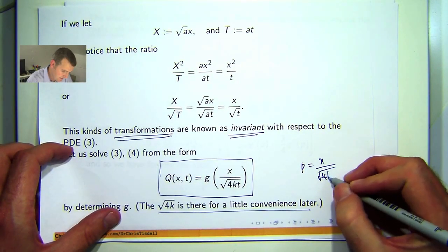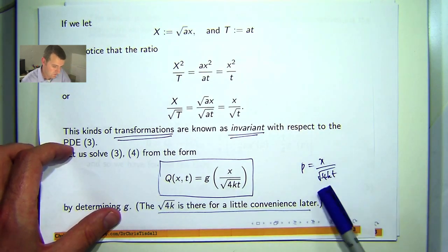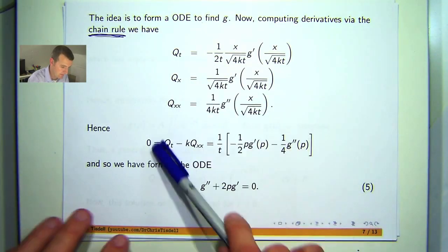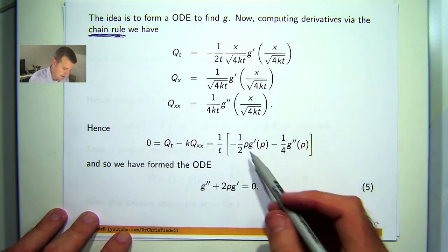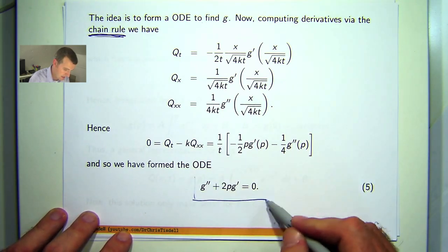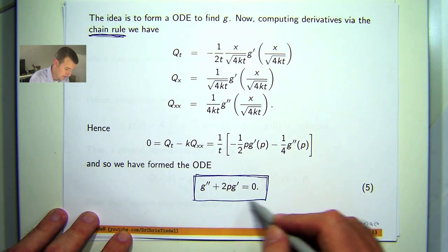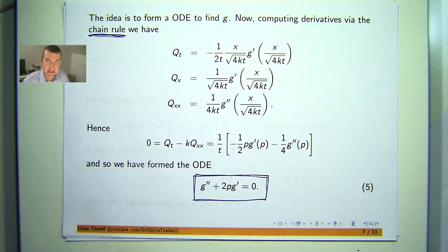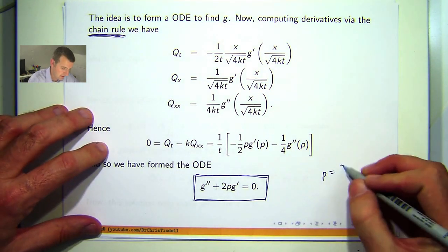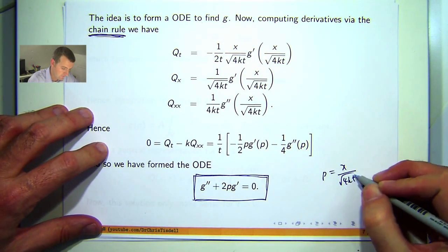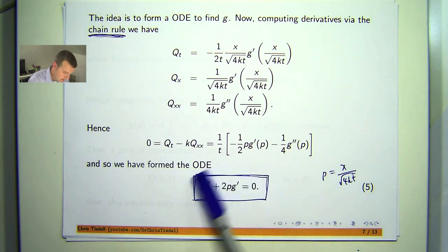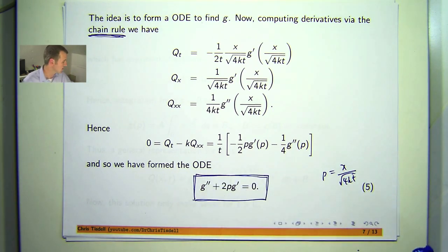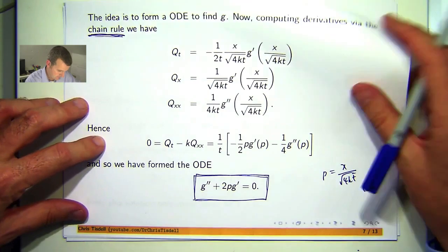So let's put these all together. And just simplifying the notation with this p, x on root 4kt, I come up with the following. Now t is greater than 0, so this will cancel out. And I'll end up with my ODE. Now this is a second order linear ODE for g, and we've made the substitution p equals x on root 4kt. Now the coefficient here is not constant, that's actually the variable p, but we can solve this reasonably easily.